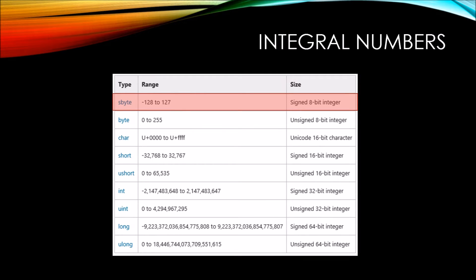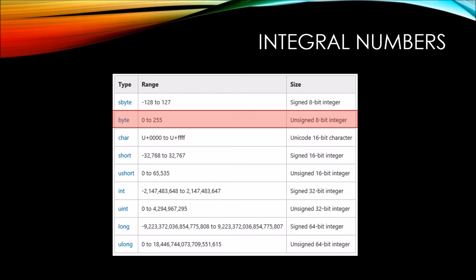Here we have the sbyte, which allows us to put any number between negative 128 to positive 127, and it takes 8 bits. 8 bits is equal to 1 byte. A regular byte can be any number between 0 and 255. The char type allows us to use any one of the Unicode 16-bit characters.